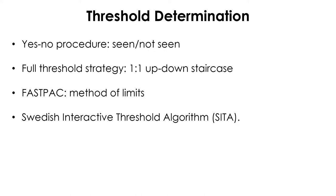Depending upon the number of test locations and the level of abnormality, the test can easily take more than 15 minutes, which can be quite time-consuming and demanding for clinical purposes. For that reason, faster algorithms have been developed to cut down testing time. Fast PACK is an early example of such effort, which uses a 3 decibel step size and estimates the threshold after only one reversal, except for four primary seed locations in which standard full-threshold testing is carried out.